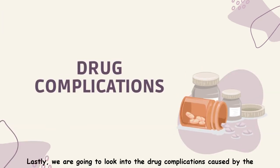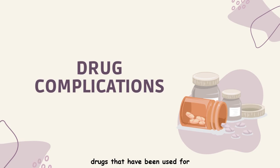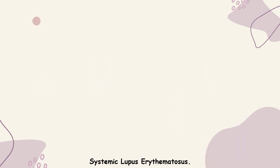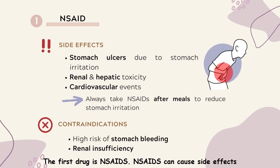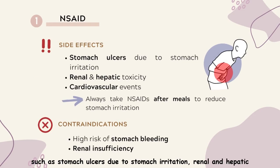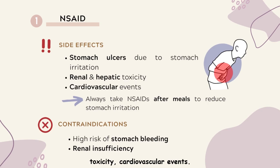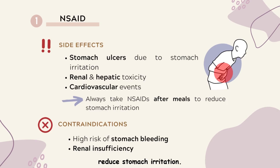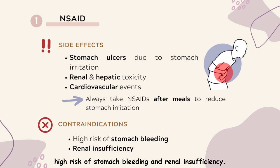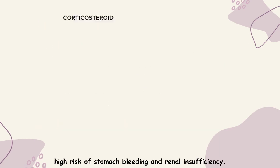Lastly, we are going to look into the drug complications caused by the drugs used for systemic lupus erythematosus. The first drug is NSAIDs. NSAIDs can cause side effects such as stomach ulcers due to stomach irritation, renal and hepatic toxicity, and cardiovascular events. It is always advisable to take NSAIDs after meals to reduce stomach irritation. NSAIDs are also contraindicated in people with a high risk of stomach bleeding and renal insufficiency.